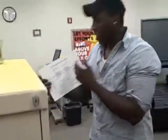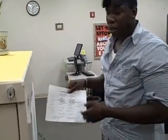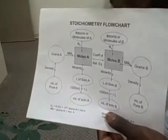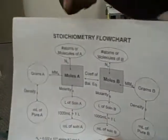This is a stoichiometry flowchart. What you're looking at is a chemistry chart that gives you a diagram layout of everything you need to know about stoichiometry.